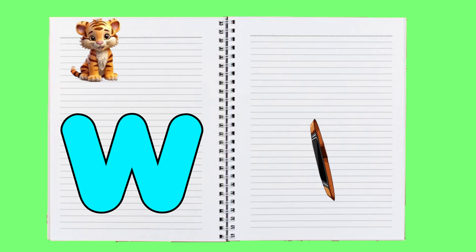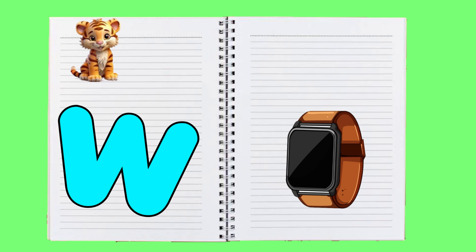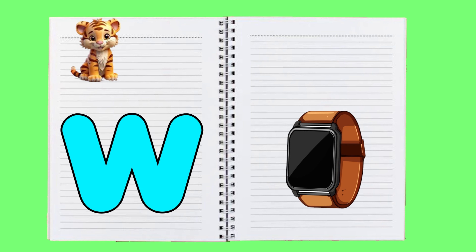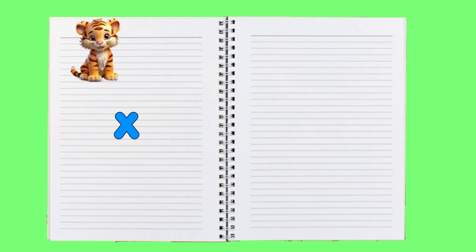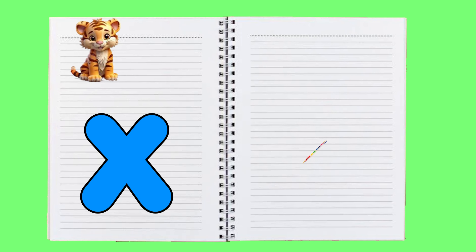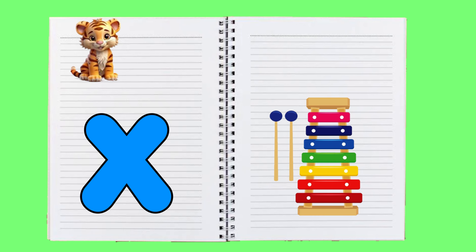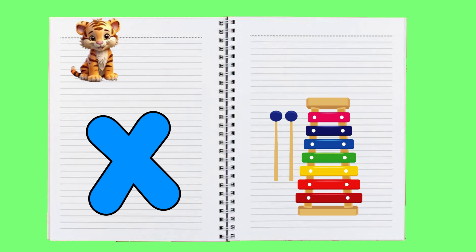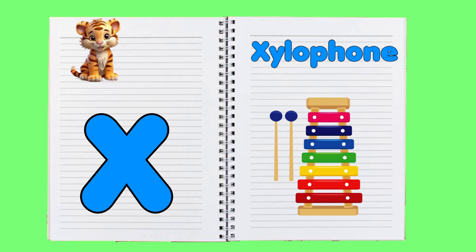W is for watch, w-w-watch. X is for xylophone, x-x-xylophone.